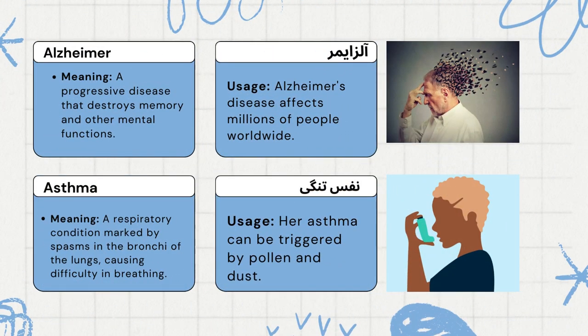Alzheimer's. Meaning: a progressive disease that destroys memory and other mental functions. Usage: Alzheimer's disease affects millions of people worldwide.